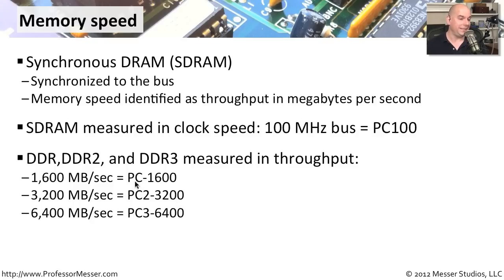So PC1600 means this is DDR memory rated at a throughput of 1600 megabytes per second. If it's PC36400, that's DDR3 memory rated with a throughput of 6400 megabytes per second.